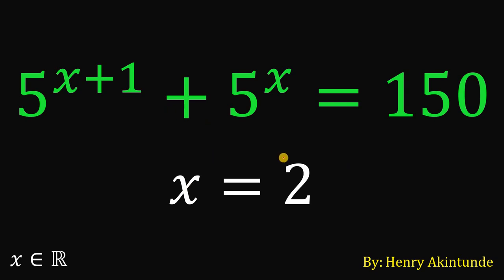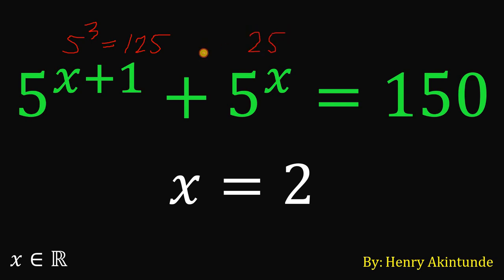To check this answer, we replace all x with 2. We have 5 raised to 2 plus 1, which gives us 5 raised to 3, and 5 raised to 3 equals 125. Next, 5 raised to 2 gives us 25. Now, 125 plus 25 results in 150. Therefore, x equals 2 is definitely the answer to this equation. And as always, we are done.